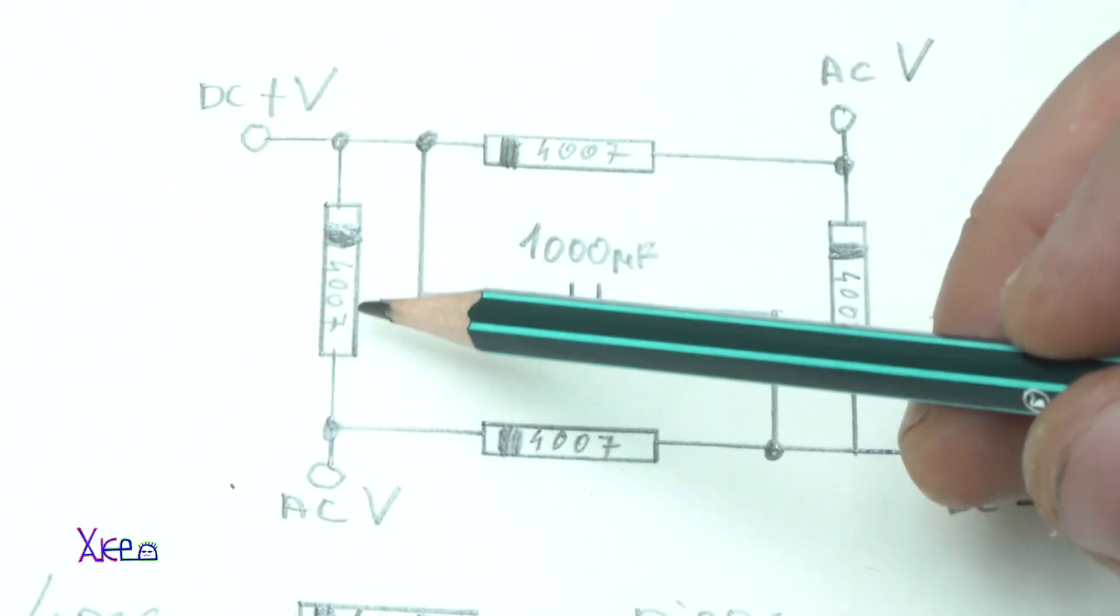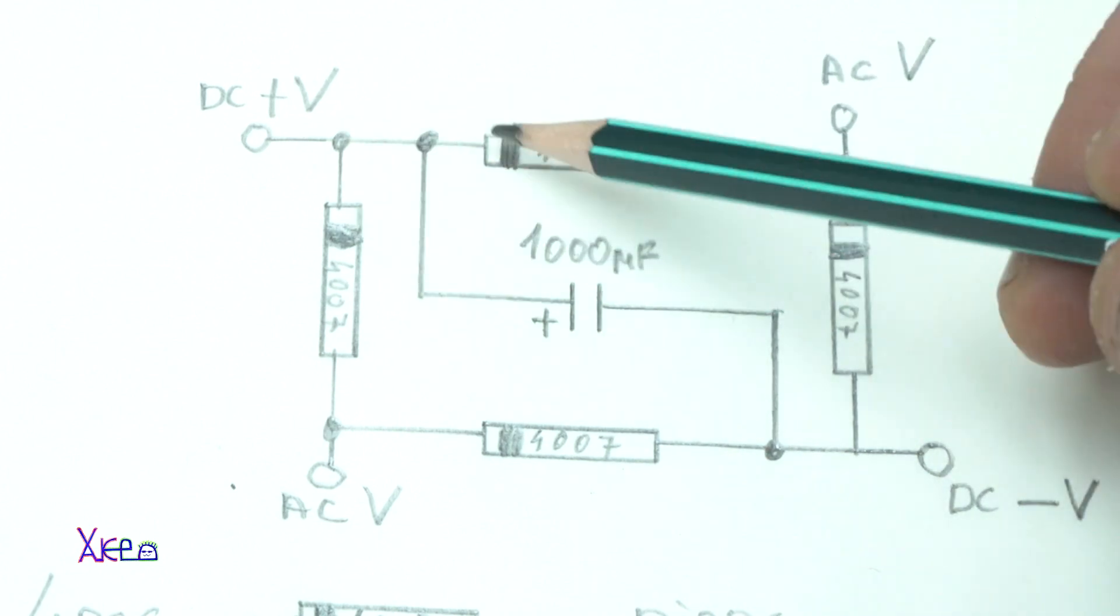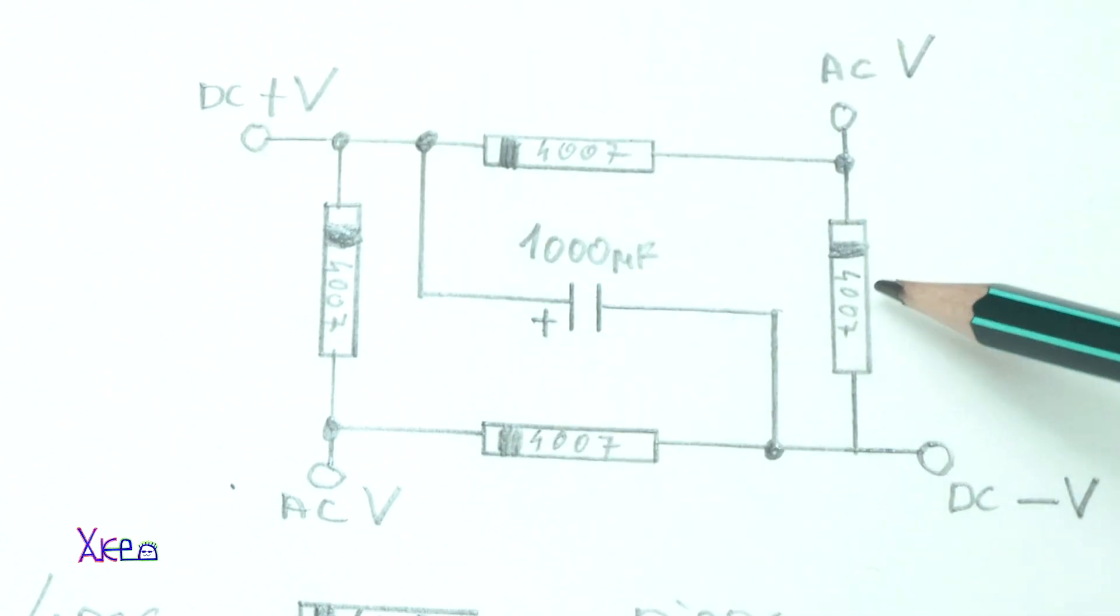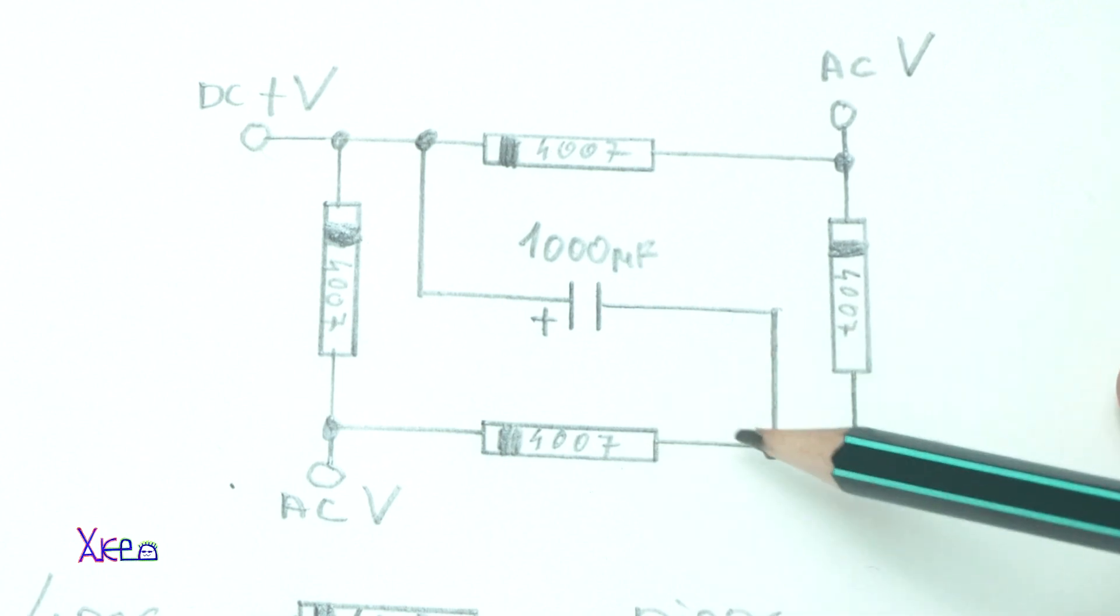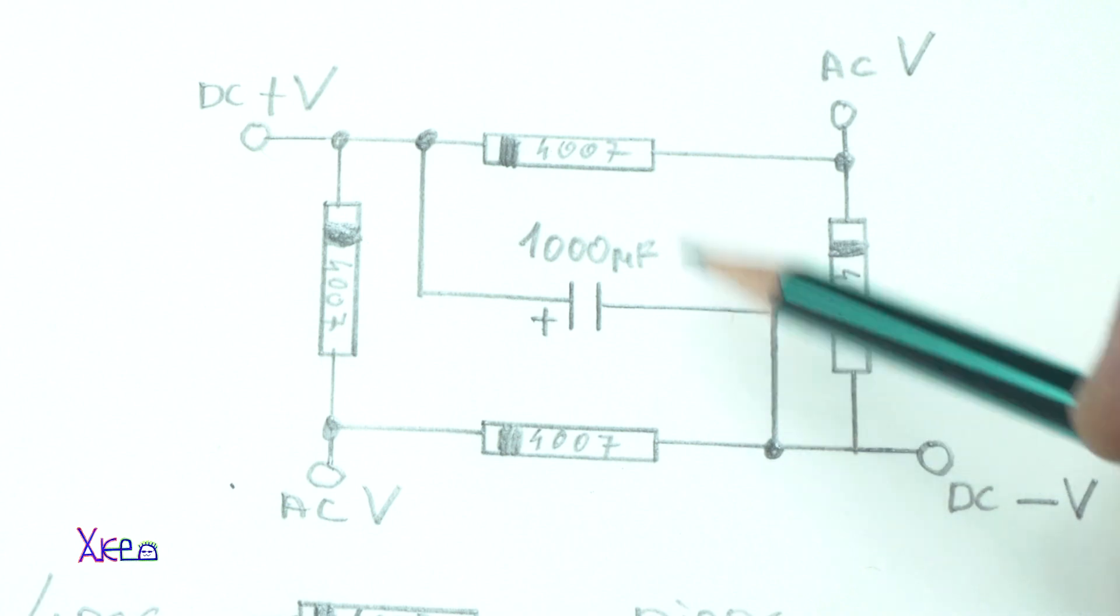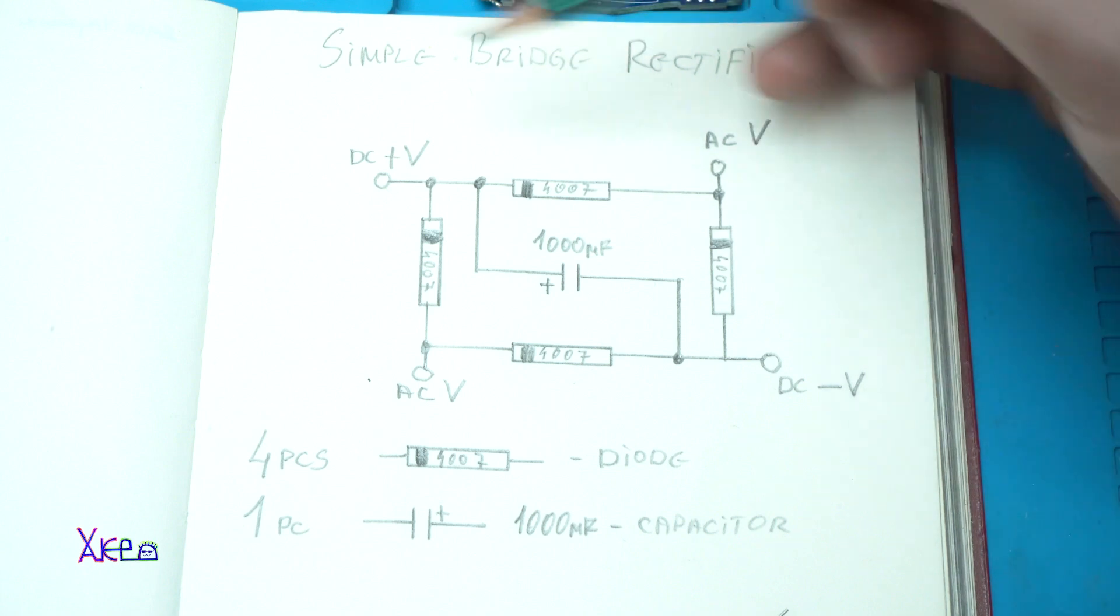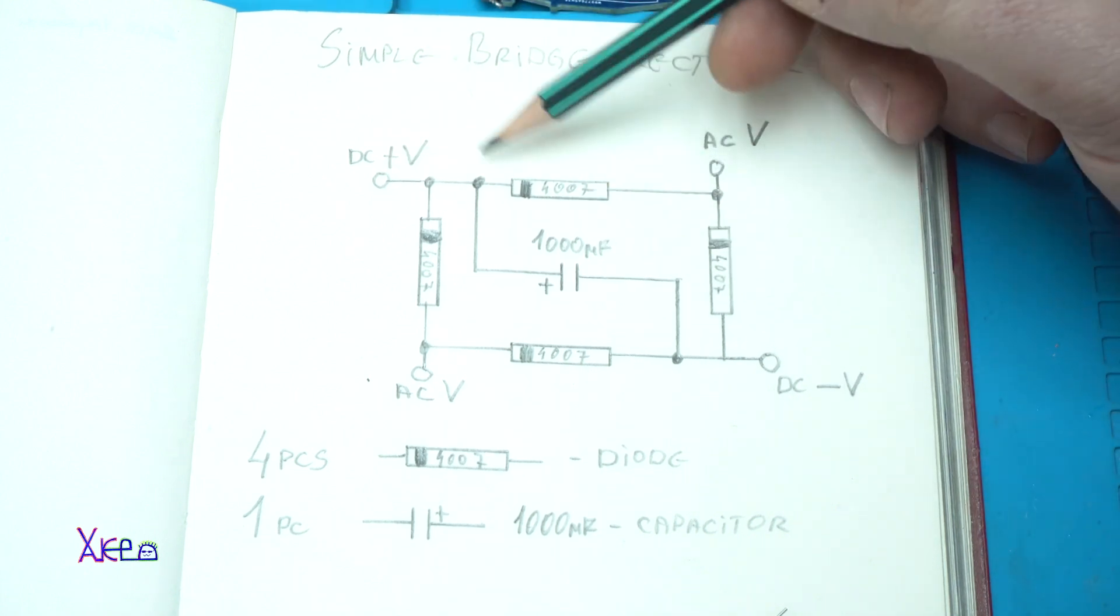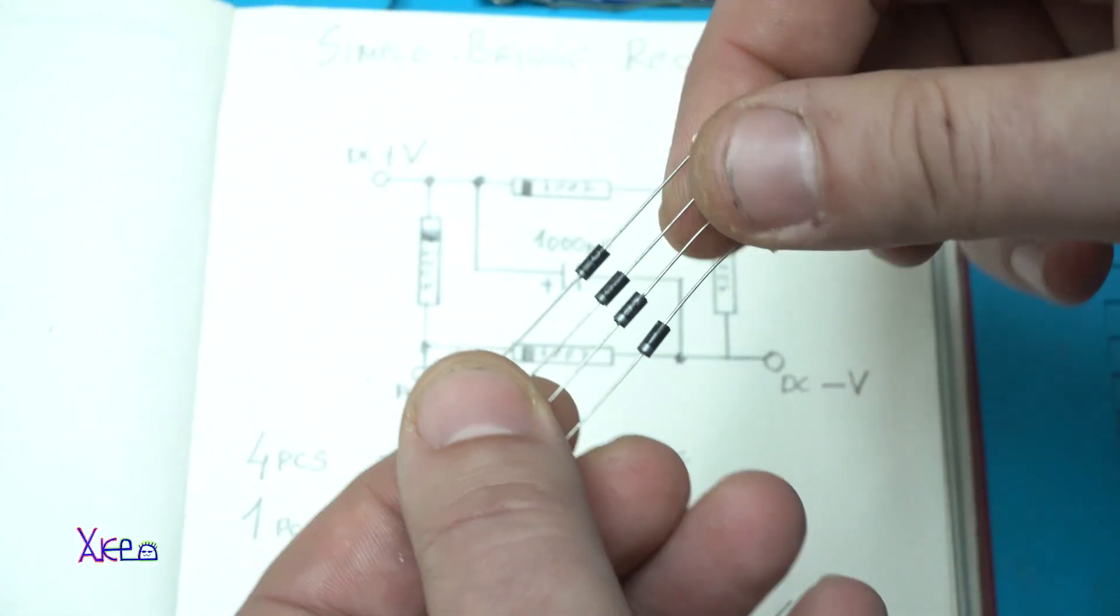To explain the bridge rectifier circuit, you need four diodes and one capacitor of 1000 microfarads. Two of the diodes we need to connect with the same polarity with this mark on one hand, and two other diodes with positive side of the diodes to be connected together. On the left corners we have AC voltage in, and on these points we have DC voltage out, positive and negative.